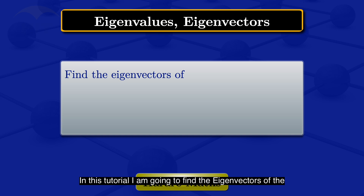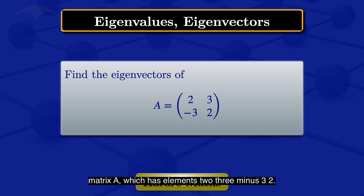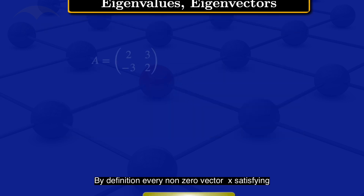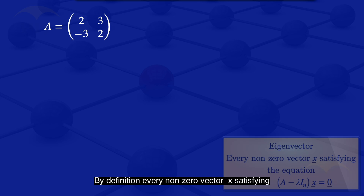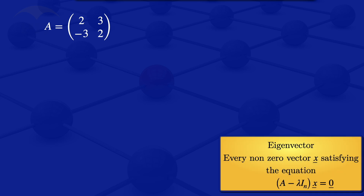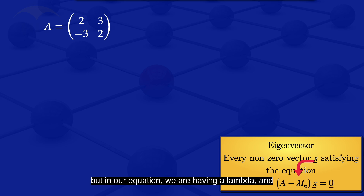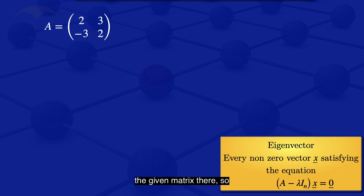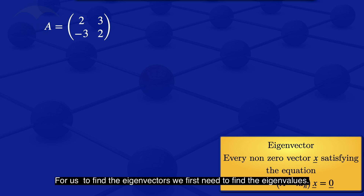In this tutorial, I am going to find the eigenvectors of the matrix A which has elements 2, 3, minus 3, 2. By definition, every non-zero vector x satisfying the equation A minus lambda I_N multiplied by x equals the zero vector is called an eigenvector. So we are going to look for that vector x, but in our equation we have a lambda, which is an eigenvalue of the given matrix. So for us to find eigenvectors, we first need to find eigenvalues.